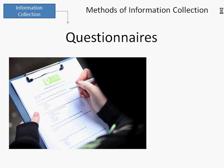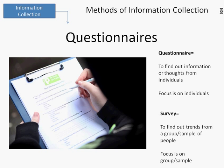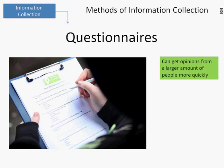Questionnaires are another method that can be used. Questionnaires shouldn't be confused with surveys. Questionnaires are to find out information or thoughts from individuals and the focus is on individuals whereas surveys are to find out trends from larger groups or samples of people and the focus is always on the group or the sample. So we are more interested in questionnaires as part of the systems life cycle. Good things about questionnaires are we can get opinions from a large amount of people more quickly. Bad things are they are often difficult to design and create.